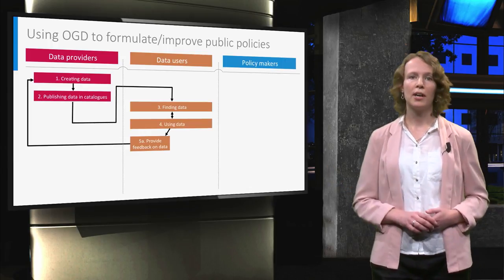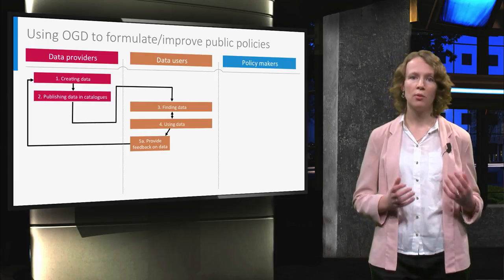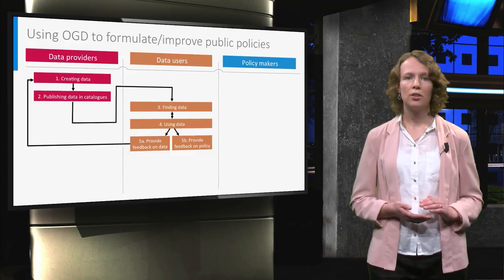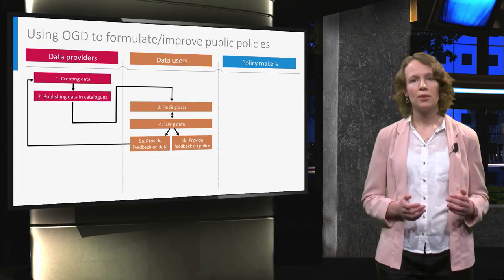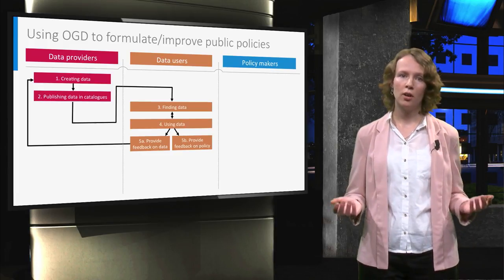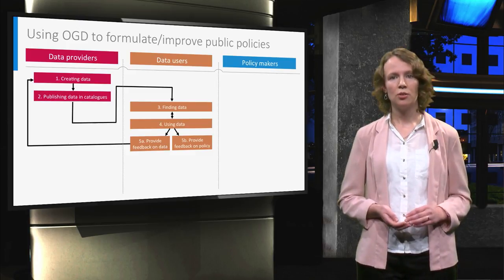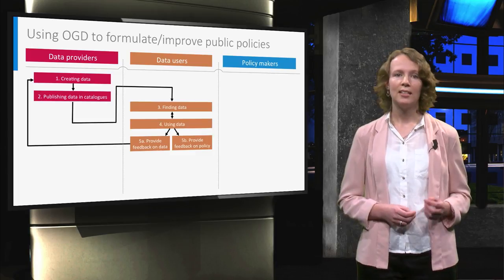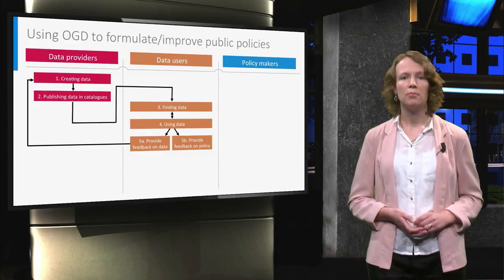Open data users can provide feedback on data sets, such as feedback regarding missing values or data quality problems. Moreover, data users can provide feedback based on the outcomes of the data use. For instance, a researcher can use open government data to answer how taxation affects welfare. This type of data use might help answer research questions and might provide new insights and conclusions. And these insights may be interesting to other open data users, but also to policy makers.